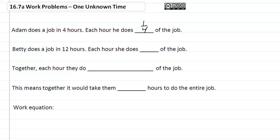Betty does a job in twelve hours and that means each hour she does one twelfth of the job. Together each hour they do one fourth plus one twelfth, which equals one third.